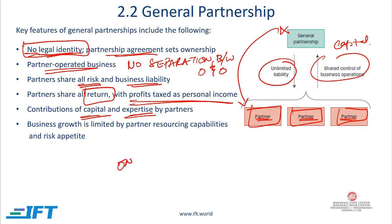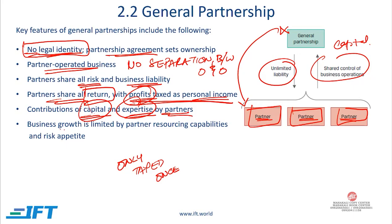The general partnership is still taxed only once at the personal level — the business gives returns to the partners as profits, and they pay personal income tax. However, there is still a limitation because the partners are contributing capital and expertise themselves, so business growth is limited to the amount of capital, expertise, and risk appetite they can provide. For the business to grow further, we need to consider the limited partnership and the corporation.